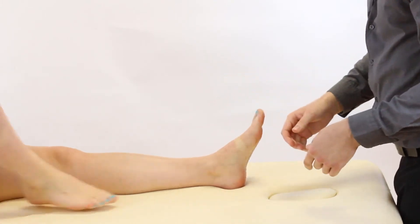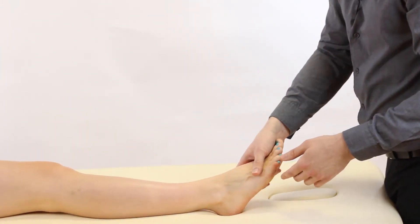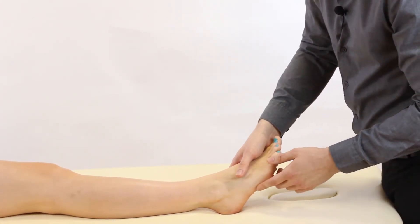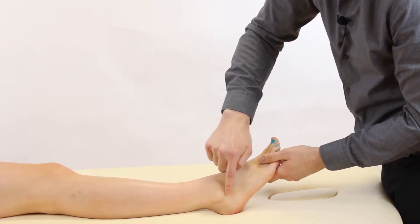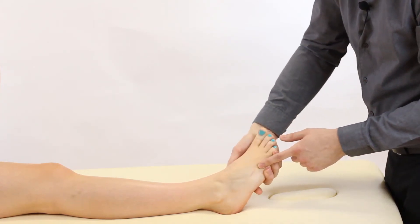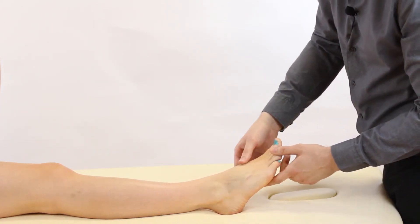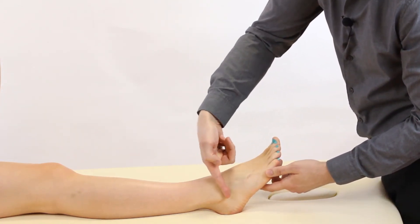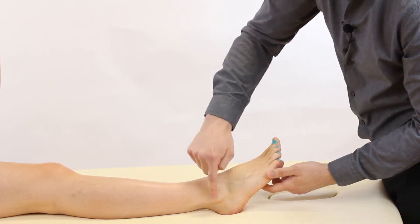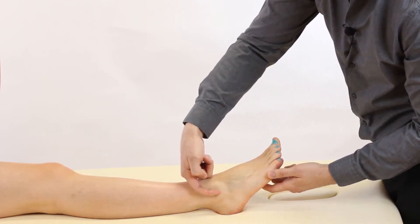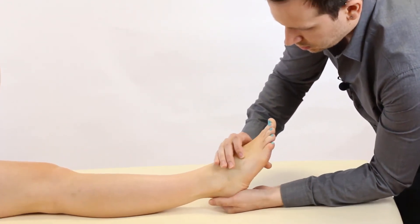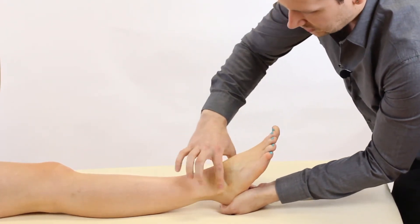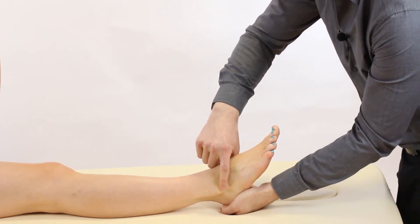Another one to be aware of is patients that present with pain across here following an ankle inversion sprain. What can sometimes happen is because of the way the tissue stretched, the fibular head starts to migrate a few millimeters forwards, and so when we bring the foot in this way it can actually impinge, so that's something to look out for.